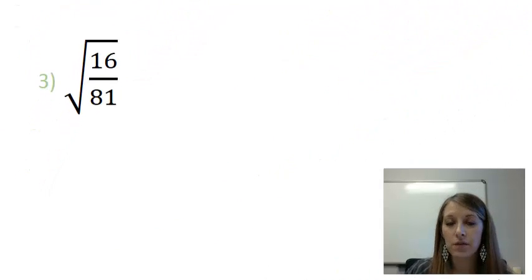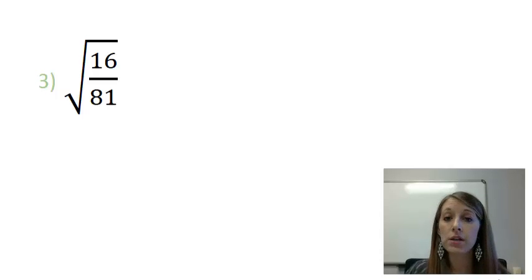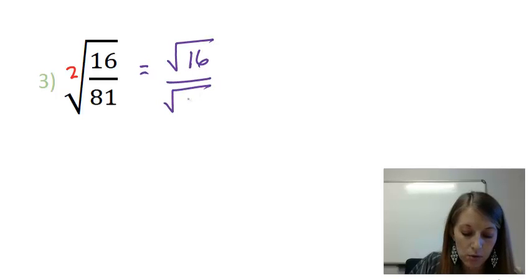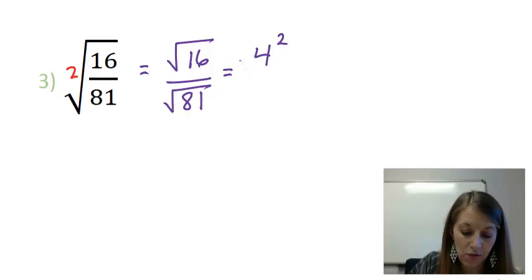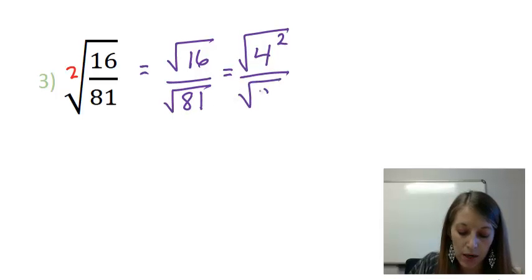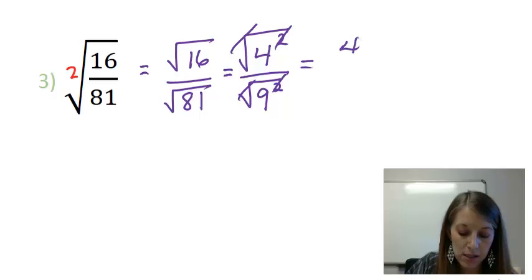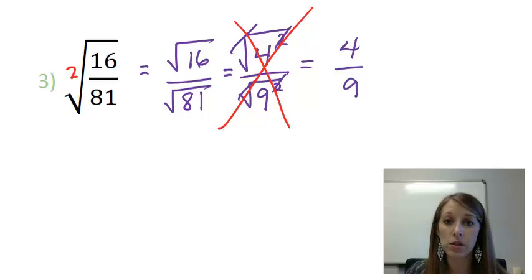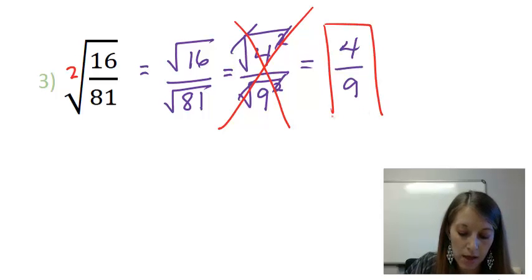Example 3 has a fraction involved. We can focus on the numerator and denominator separately, just like we did with exponents. This is a square root, so I find the square root of the numerator and the square root of the denominator separately. Something squared to give me 16 is 4, because 4 times 4 is 16. Something squared to give me 81 is 9, because 9 times 9 is 81. The squares and roots cancel out, leaving positive 4 over positive 9. So my final answer is 4 over 9.